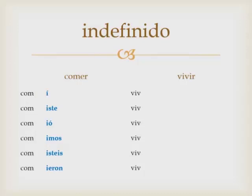Notice these are very similar to the AR verb endings. You'll also notice that the ER and IR verbs share the same set of endings. For vivir: viví, viviste, vivió, vivimos, vivisteis, vivieron. It's easy to remember because they're the same endings for both ER and IR. And í and ió have an accent.